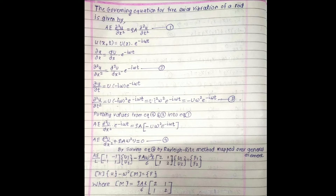The governing differential equation for the free axial vibration of the rod is given by: AE · ∂²u/∂x² = ρA · ∂²u/∂t².